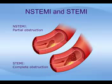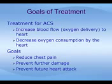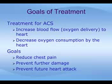One type of heart attack, NSTEMI, is caused by partial obstruction of a coronary artery and causes damage that does not involve the full thickness of the heart wall. The other type, STEMI, is caused by complete obstruction of a coronary artery and does damage the full thickness of the heart wall. Treatment of unstable angina, NSTEMI, and STEMI aims to increase blood flow and oxygen delivery to the heart muscle and to decrease oxygen consumption, in order to reduce chest pain, prevent further heart muscle damage, and prevent a future heart attack.